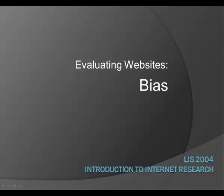Bias, or point of view, is the perspective or argument taken by the creator of a website, article, or any other type of information. It is how the author wants you to react, or a way of thinking the author wants you to adopt. All information has some level of bias. Remember from the presentation on authority that finding the author of a web page helps you understand the agenda. The agenda is the bias, and this presentation will show you some specific examples you can use to understand bias when conducting your own research.